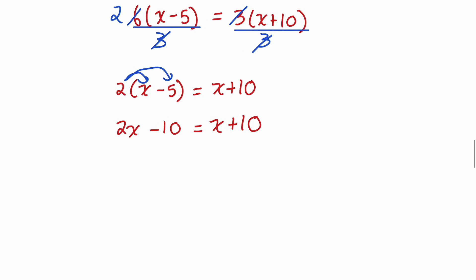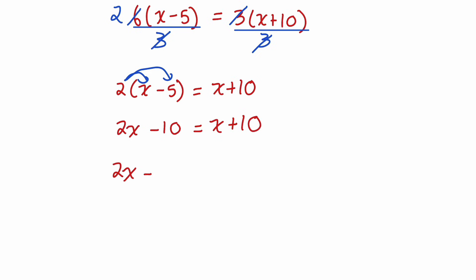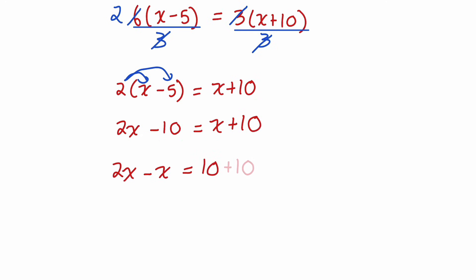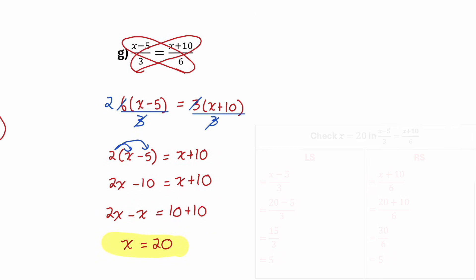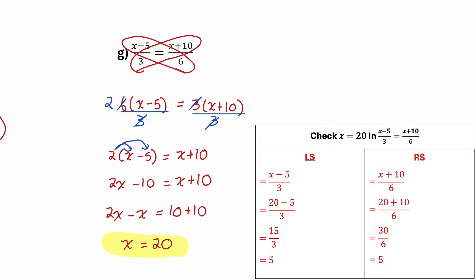Now I should rearrange this to get the variable terms on the same side — I'll bring them both to the left. On the left, it'll be 2x minus x. On the right, I'll get my constants: I'll leave that 10 and bring this negative 10 over by adding 10, giving me x equals 20. So that's the final answer, which can be checked in the original equation.